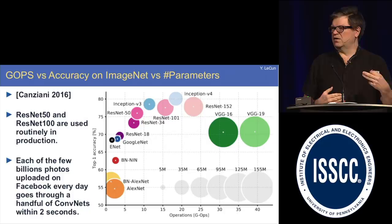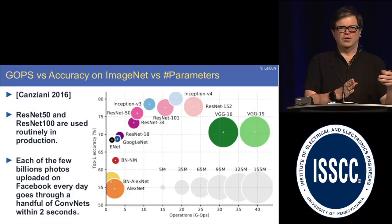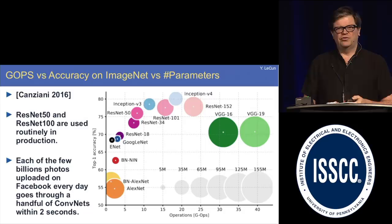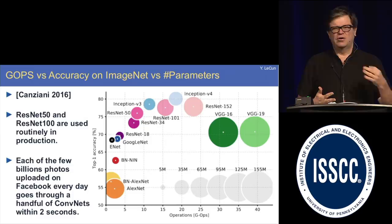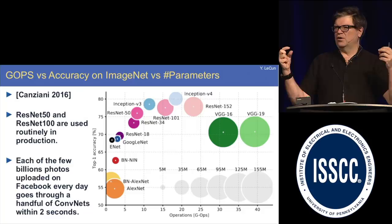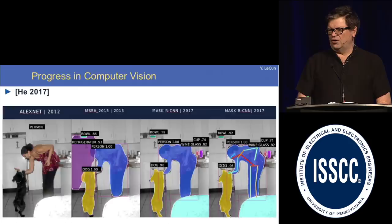Companies like Facebook and Google use convolutional nets very widely for content filtering and content ranking. Every time someone uploads a photo on Facebook — and this happens several billion times a day — the photo goes through a handful of convolutional nets performing tasks like detecting objectionable content, face recognition, and generating descriptions for the visually impaired. A significant amount of computation is devoted to this, and it's going to increase as we scale to live video — generating subtitles in real time, translating language in real time. That creates demand for work from this community.